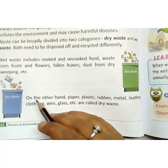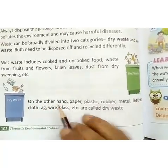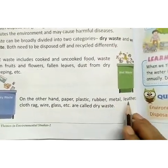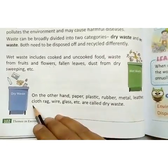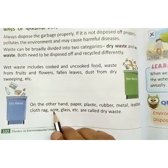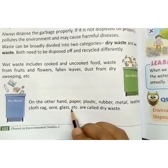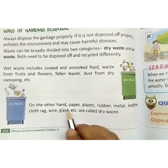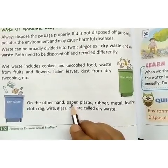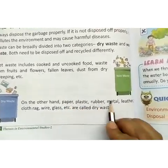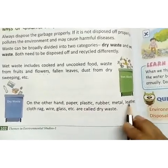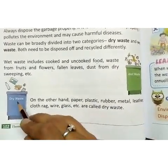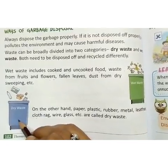What is dry waste? On the other hand, paper, plastic, rubber, metal, leather, cloth rag, wire, glass, etc. are called dry waste. All these things — if you no longer use them, paper, plastic, rubber, metal, leather — all the waste from these things will go in the dry waste dust bin, that is the blue one.